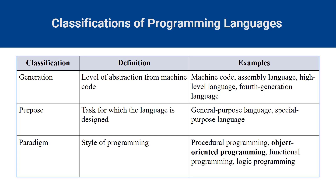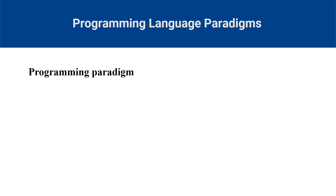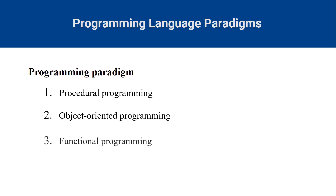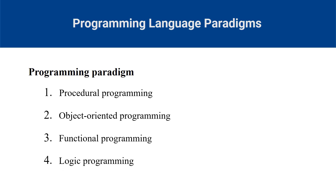Another way to categorize programming languages is by their intended use or purpose. Some languages are general-purpose, meaning they can support a broad range of applications, while others are domain-specific, meaning they are tailored for a particular problem domain. For instance, C is a general-purpose language commonly used for system programming, while SQL is a domain-specific language used for database programming. Programming languages can also be classified by their paradigm, which focuses on the style of programming or set of principles and practices that guide how to program or solve a problem. Some of the most common programming paradigms include procedural programming, object-oriented programming, functional programming and logic programming. Each paradigm has its own strengths and weaknesses.